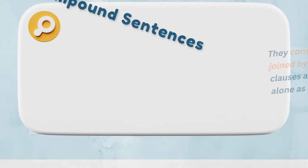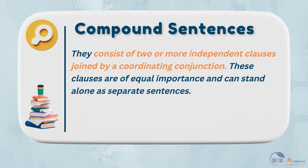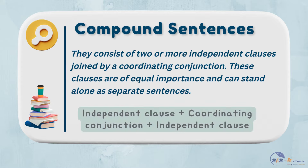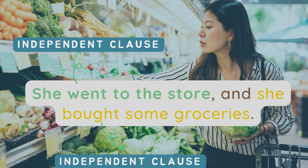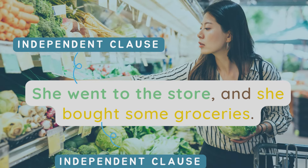Now let us move on to the next type: compound sentence structure. Sometimes we want to express two related ideas in a single sentence — that's where compound sentences come in. They consist of two or more independent clauses joined by a coordinating conjunction. These clauses are of equal importance and can stand alone as separate sentences. The structure looks like this: independent clause plus coordinating conjunction plus independent clause. For example, 'She went to the store and she bought some groceries.' The coordinating conjunction AND connects the two independent clauses, and both clauses express a complete thought.